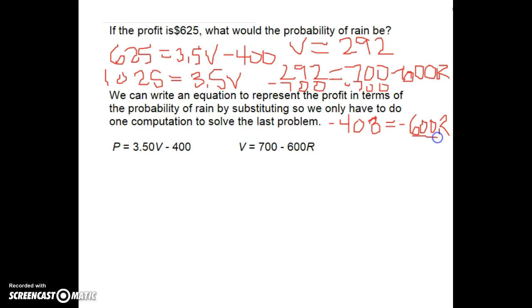So then I have negative 408 equals negative 600R. So now to get R alone I divide both sides by negative 600. And when I do that I get R equals 0.68, which means a 68 percent chance of rain if the profit is 625.